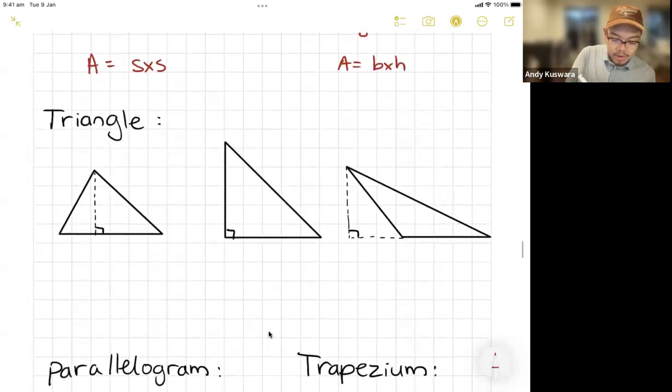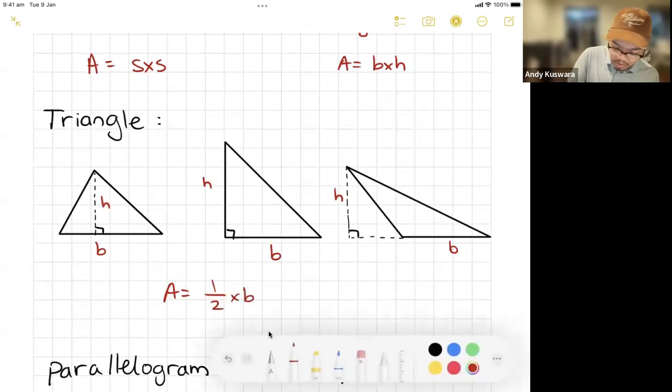Okay. Triangle. All right. We've got base. Then we've got height. The area of a triangle is half times base times height, or let's just go half base height.